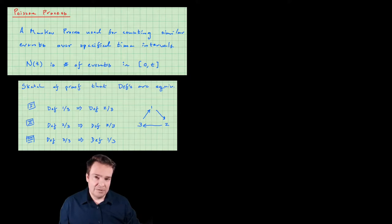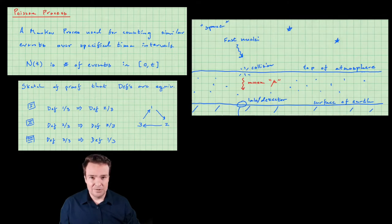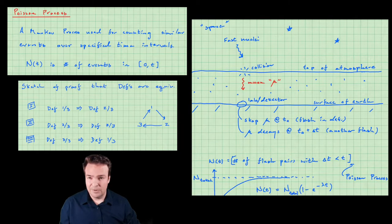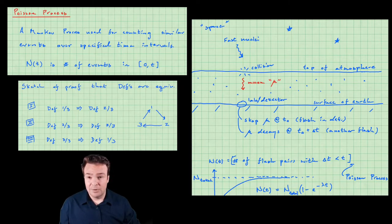We're going to finish with a discussion of a particular application to physics. There was a mystery about 100 years ago about a particle that rains down on the Earth from space that seemed to be living a lot longer than it should. The Poisson process plays a role in understanding the arrival of those particles on Earth, and the resolution involves relativity. But so today is all about the Poisson process, and I hope you enjoy it. Let's get started.